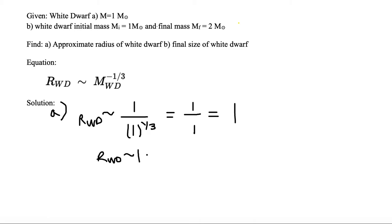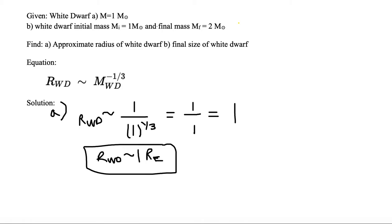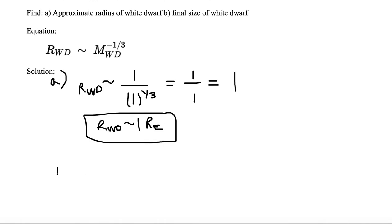So we put one R with a small e for Earth as our approximate answer. Now the real answer is 0.9 times the radius of the Earth, so it's slightly smaller than what we calculate, but it gives you a general idea of the size of the white dwarf. A solar mass white dwarf is about the size of Earth.